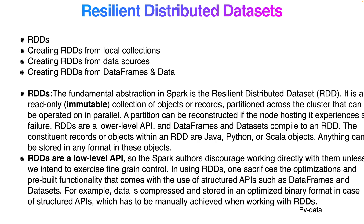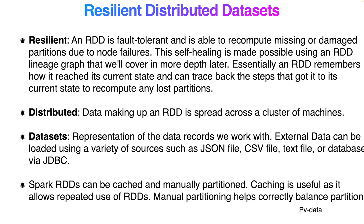When using RDDs directly, you sacrifice the optimization and functionality that comes with the structured API such as DataFrames and Datasets. For example, data is compressed and stored in an optimized binary format with the structured API — a benefit that is mutually lost when working with RDDs.